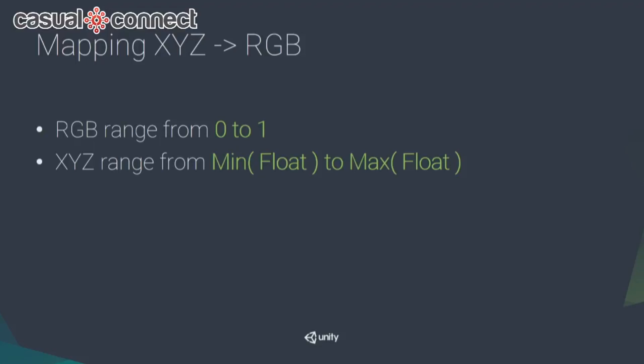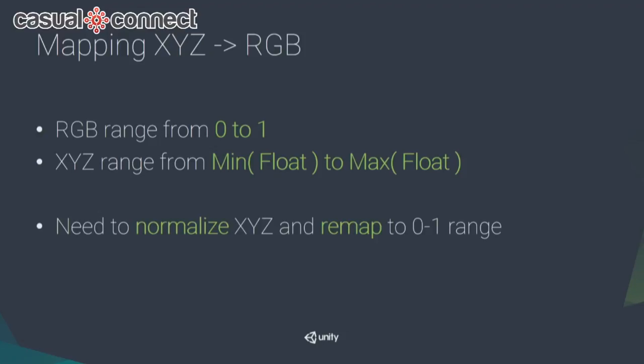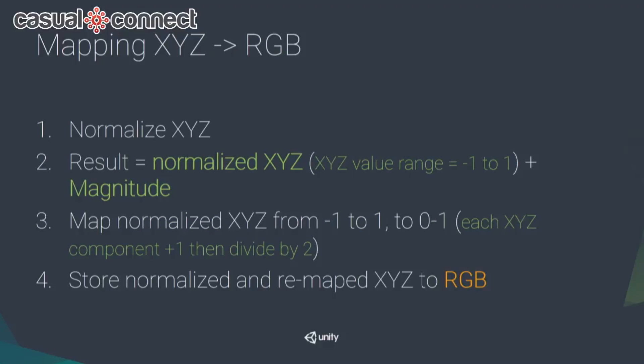There's still a minor problem: RGB values range from 0 to 1, but XYZ values range from the minimum to maximum value of a float. So we need to map XYZ to RGB. First, we normalize XYZ — the result ranges from minus 1 to 1 — and we also get a magnitude value.